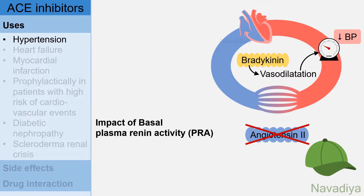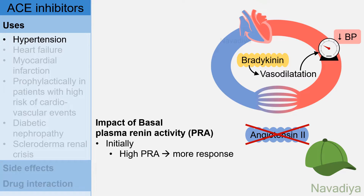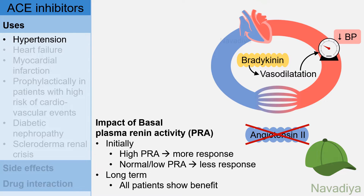The extent of antihypertensive effect depends on basal plasma renin activity at the initiation of therapy. Initially, patients with high plasma renin activity show more response, and patients with normal or low plasma renin activity show less response. However, in the long term, all patients show benefit and ACE inhibitors can be given regardless of plasma renin activity.